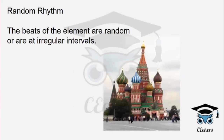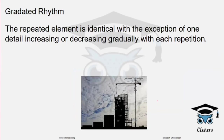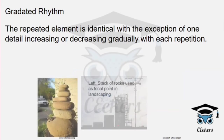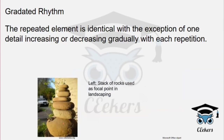Random rhythm is irregular repetition — you repeat elements but not in a regular pattern. Graduated rhythm involves repeating elements with one detail increasing or decreasing — elements appear in increasing or decreasing order of size.